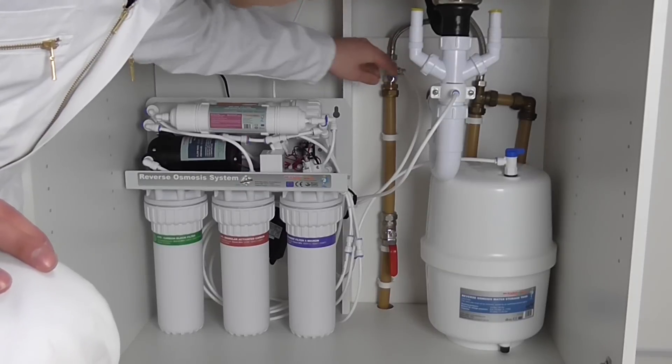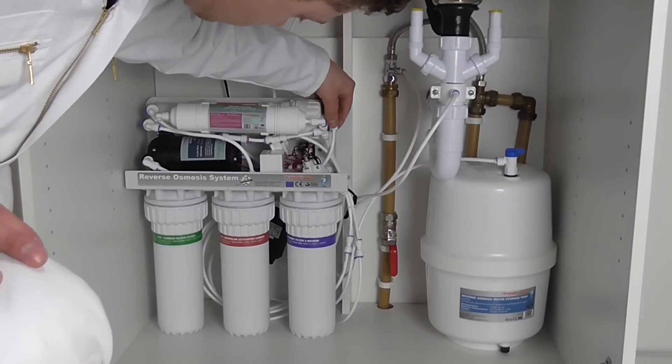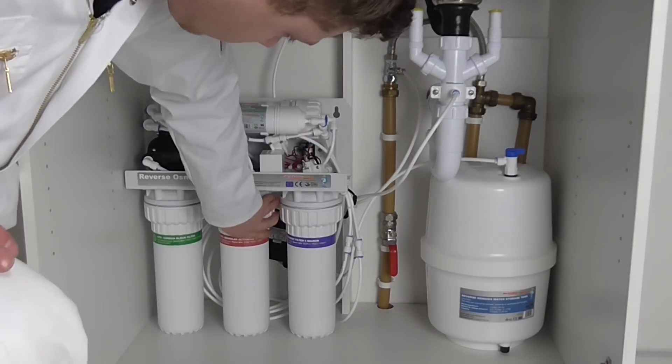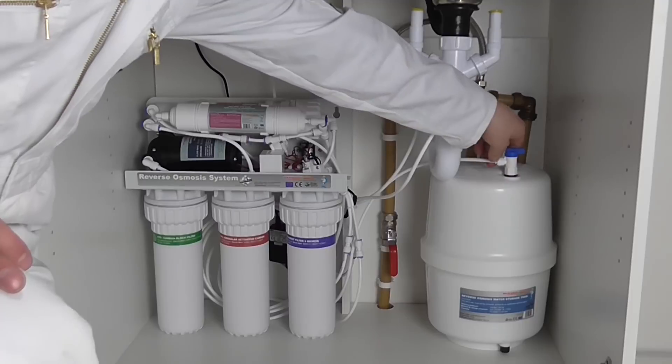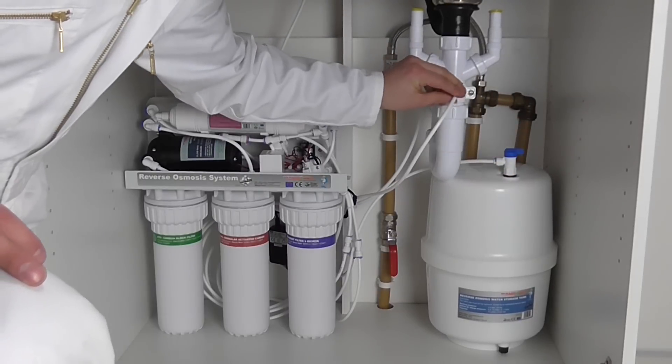Remember to keep your reverse osmosis unit in good condition by changing your filters 1 to 4 at least once per year. Membranes, filter 5, should be changed every 2 years. Respect all local plumbing codes when installing this equipment.